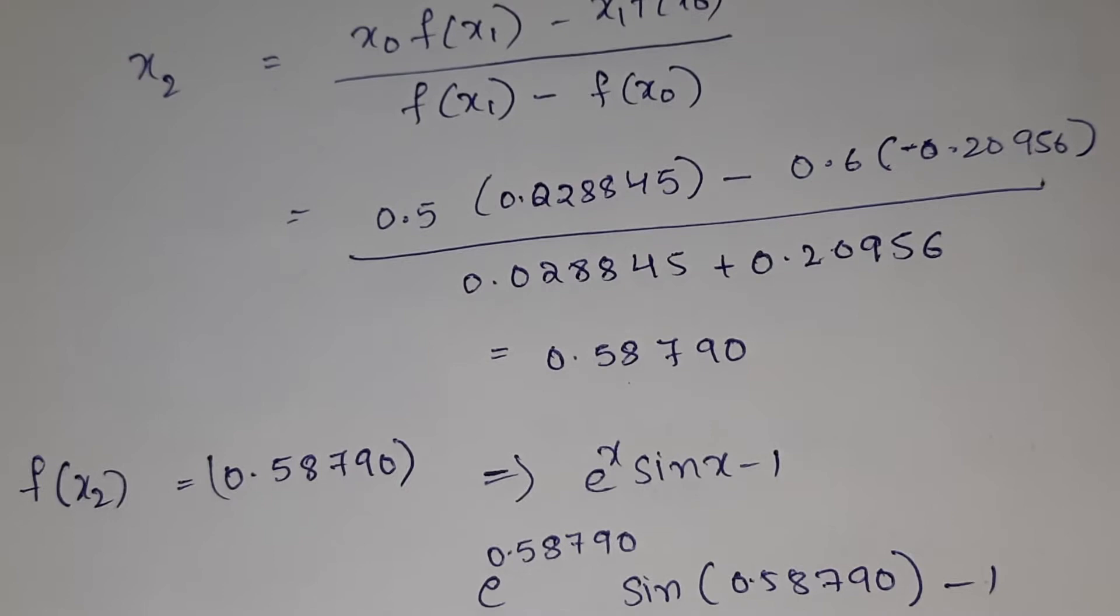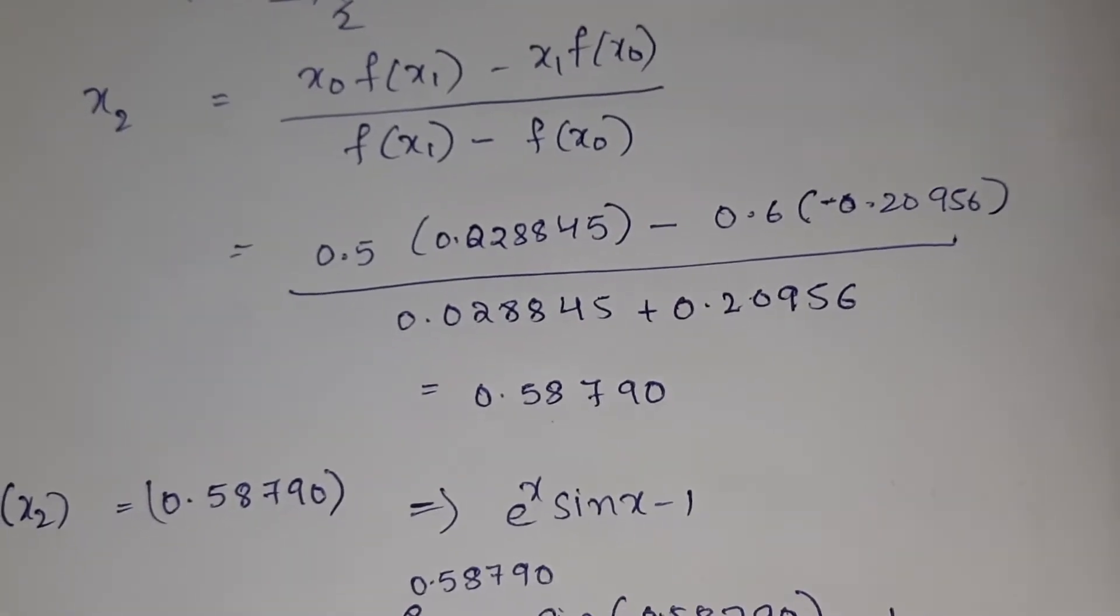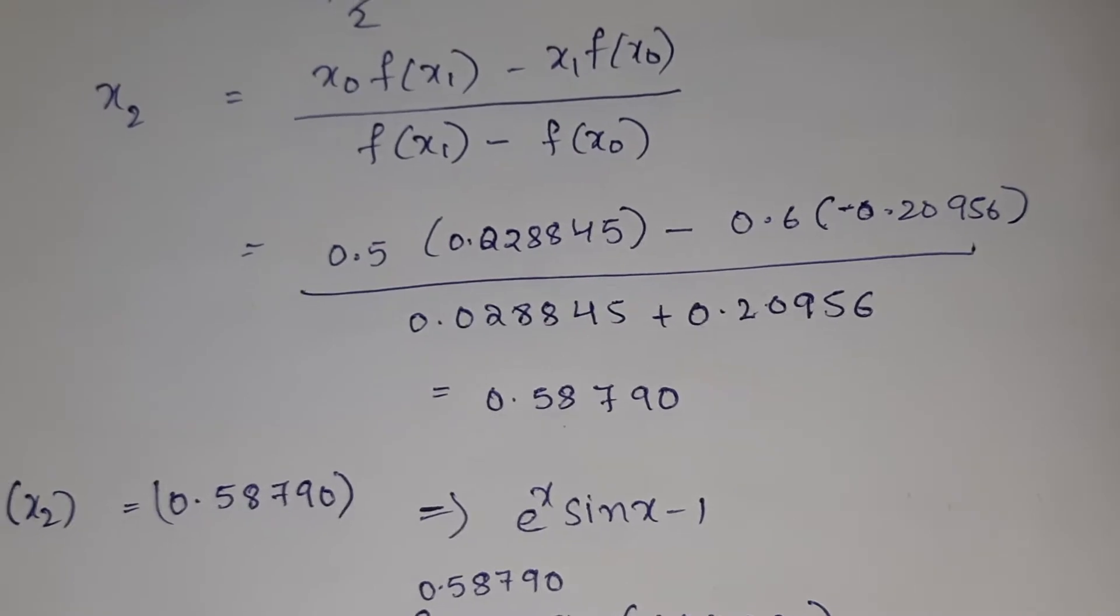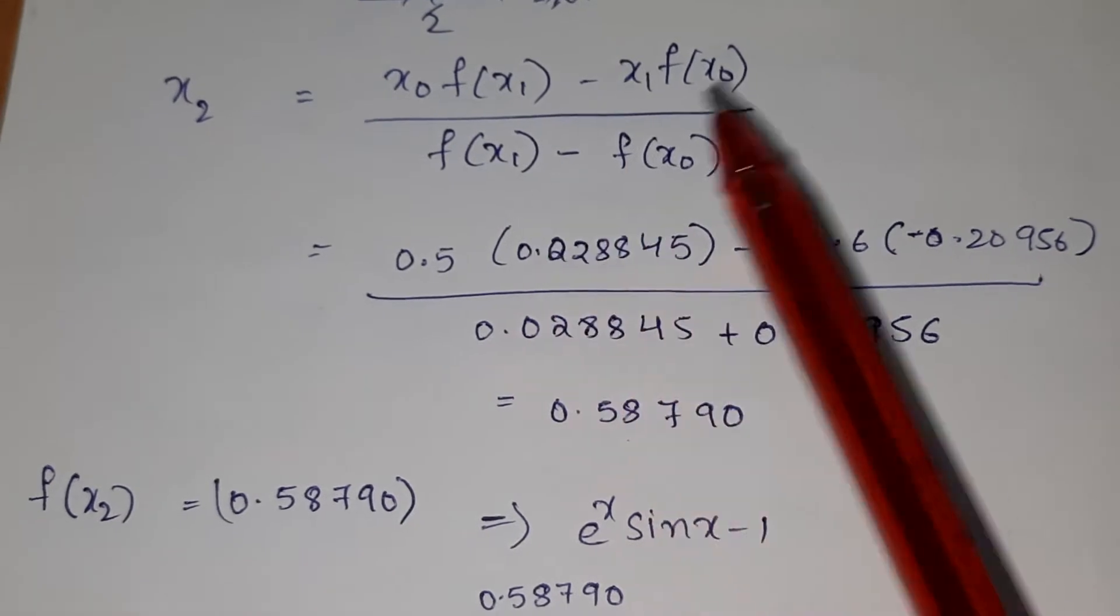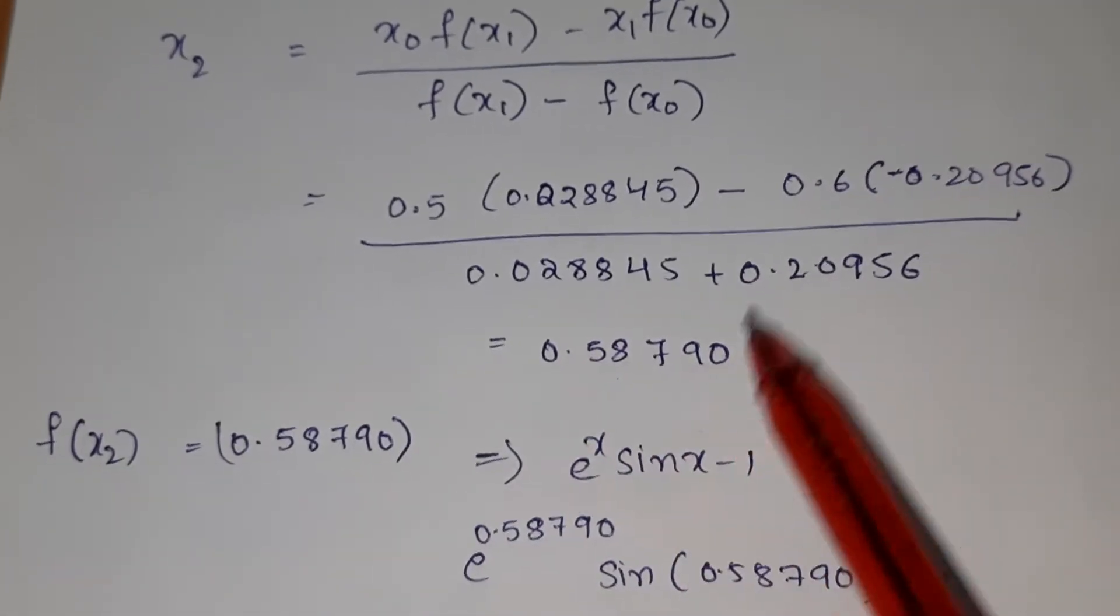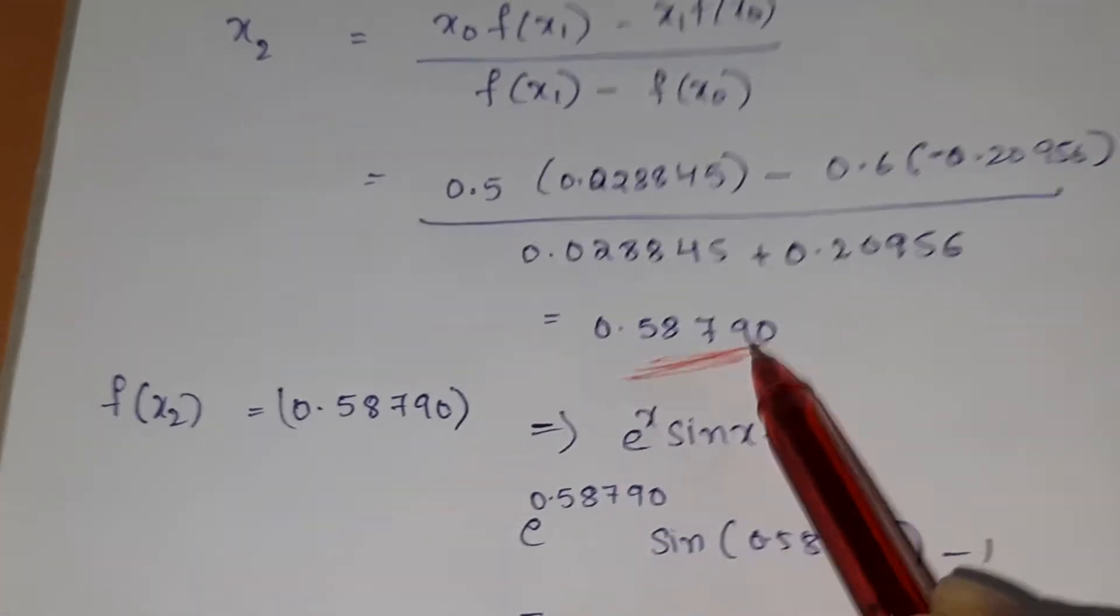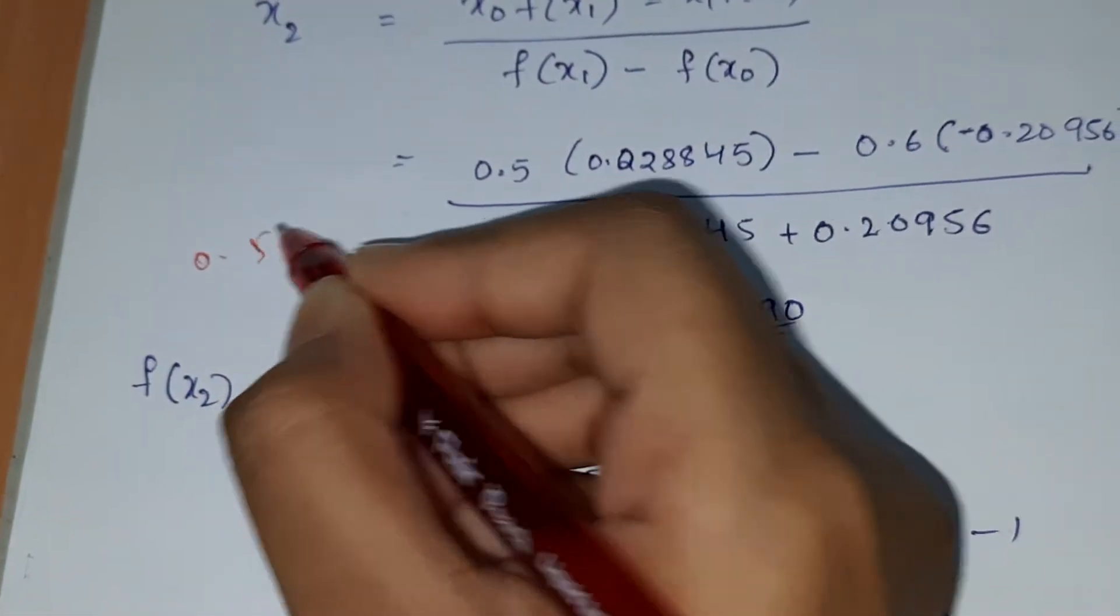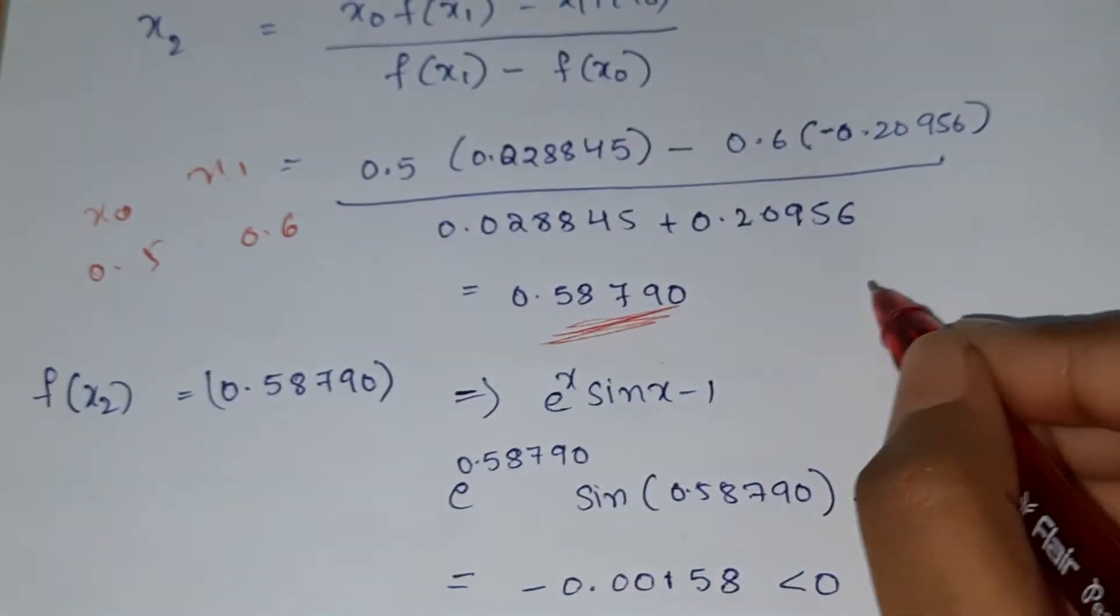Now x2 equals x0 times f(x1) minus x1 times f(x0), divided by f(x1) minus f(x0). In the previous step we found the values of f(x1) and x1. Substitute those in this formula, then you'll get this value of x2. Remember, this value is one of the roots. 0.5 is x0, 0.6 is x1, and this is x2.